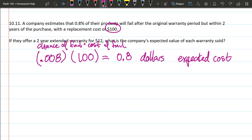Now the second part of the question: they offer the warranty for $12. So we have our $12 warranty cost—this is how much they're selling it for—minus their cost which is only $0.8, and that subtraction right there is $11.2 profit.